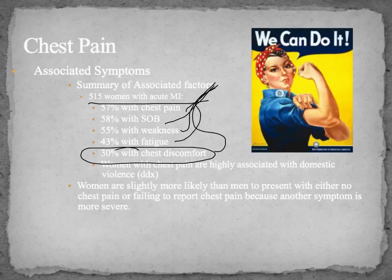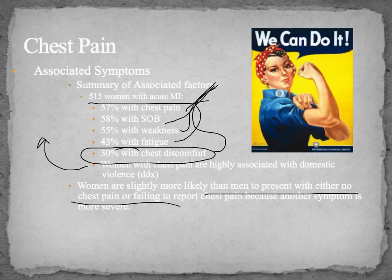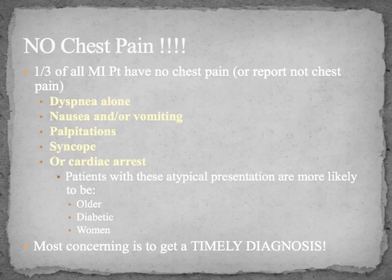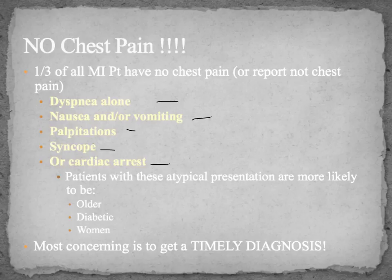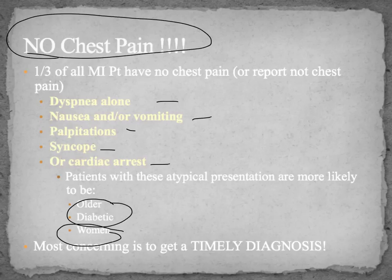Women typically present more often with no chest pain and still have an MI. You can have patients with an MI present with no chest pain. When they do, the typical symptoms will be one or any combination of: dyspnea, nausea and vomiting, palpitations, syncope, and cardiac arrest. Patients that present with atypical presentations are more likely to be women, older, and diabetic. The big key is making a timely diagnosis, because if there's no chest pain, myocardial infarction usually doesn't get diagnosed in a timely manner.